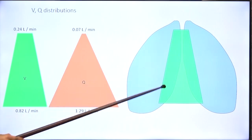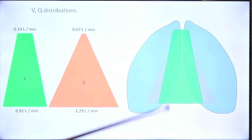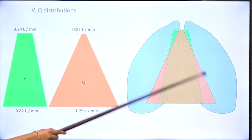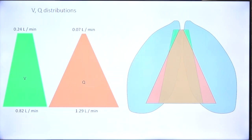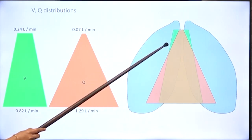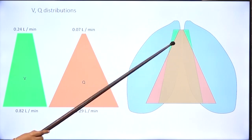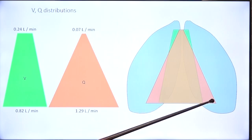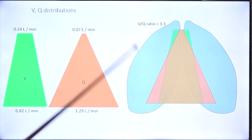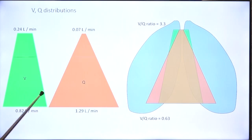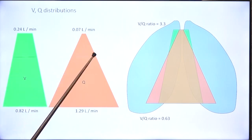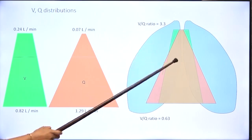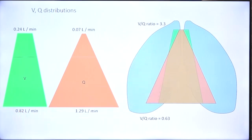In the apex there is more ventilation in comparison to perfusion, so V by Q will be more than 1 in the apex, whereas in the base there is more perfusion compared to ventilation and V by Q is less than 1. The VQ ratio in the apex of the lung is 3.3 and in the base is just 0.63. Somewhere along the third rib is where you will get a VQ ratio of 1, where ventilation and perfusion are actually matched.